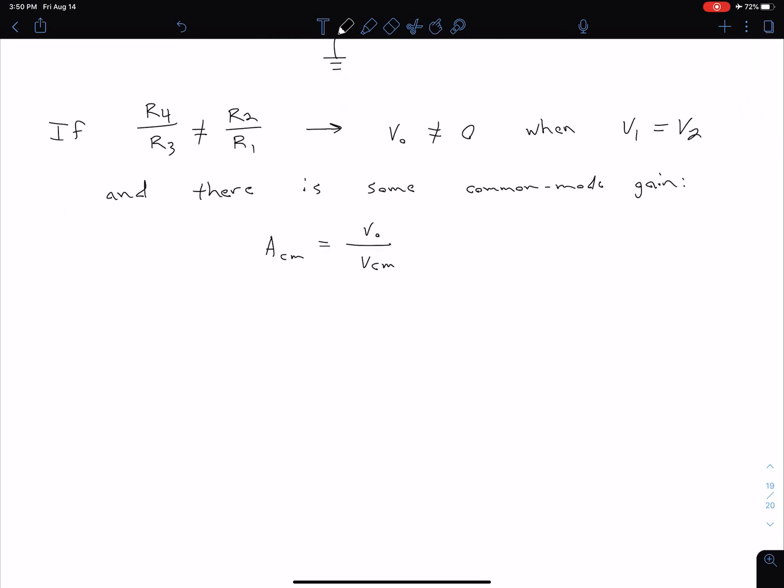Our common mode voltage is essentially just going to be the average of our two input voltages. So V common mode equals V1 plus V2 over 2. Let's call this equation 1.